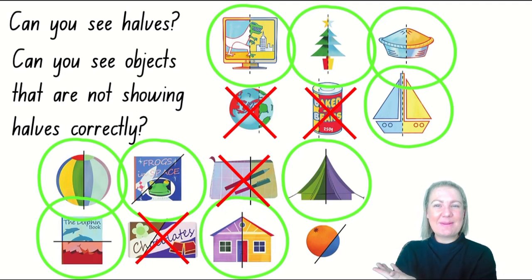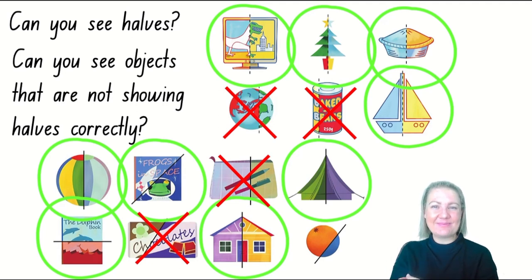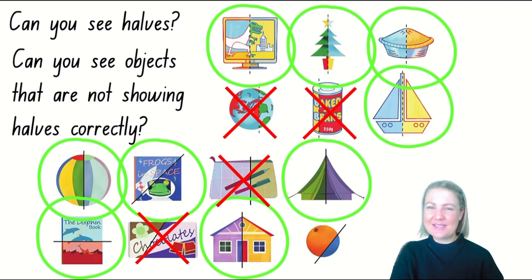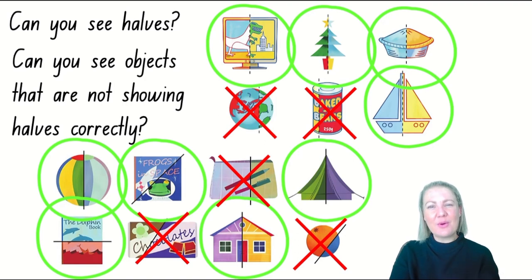My last picture, kindergarten, is a picture of an orange. There's a line of separation showing it's been split into two pieces. But to make sure it's halves, we need to check — are both pieces the same? Is it equal? It has been split into two pieces, but both pieces are not the same. So I'm going to say no, this is not showing halves correctly. Well done, kindergarten — I wonder if you know a little bit more about how halves work now.